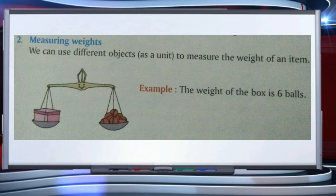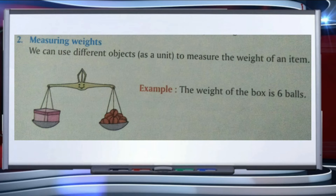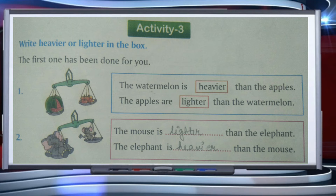We can use different objects as a unit to measure the weight of an item. Using a spring balance, on one side we put one box and on the other side we put balls. We count how many balls weigh the same as one box. The weight of the box equals six balls — when six balls are placed, the box and balls balance equally. Now let us do Activity 3 based on this.